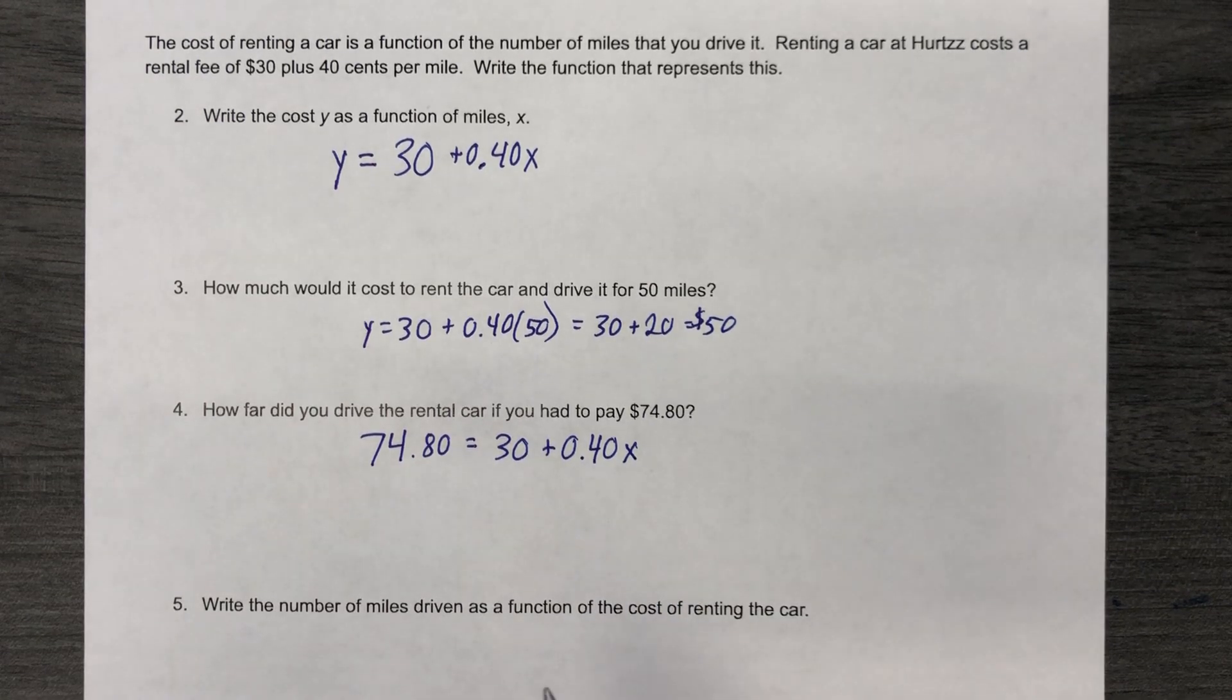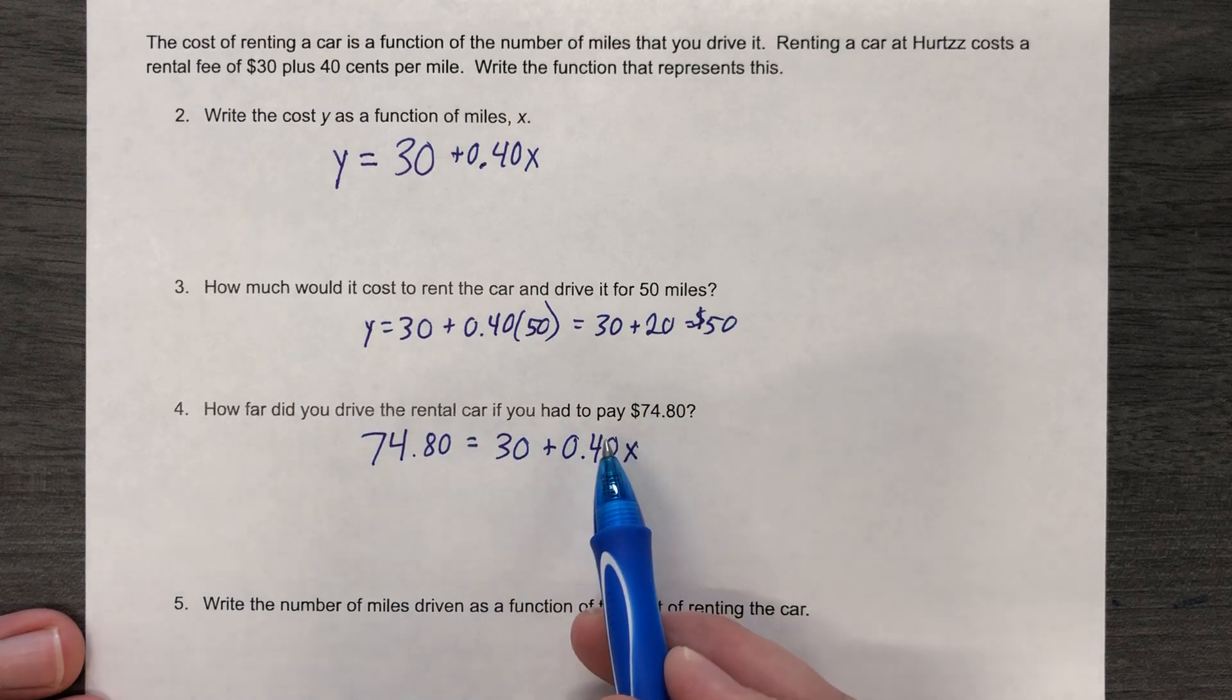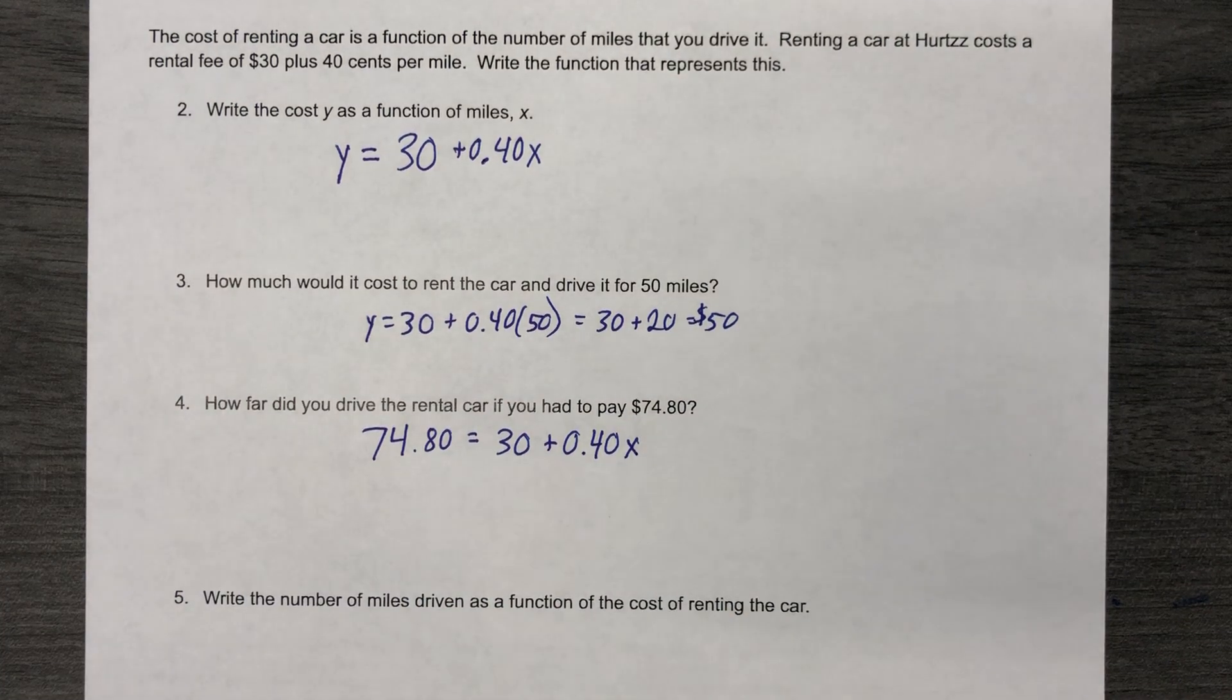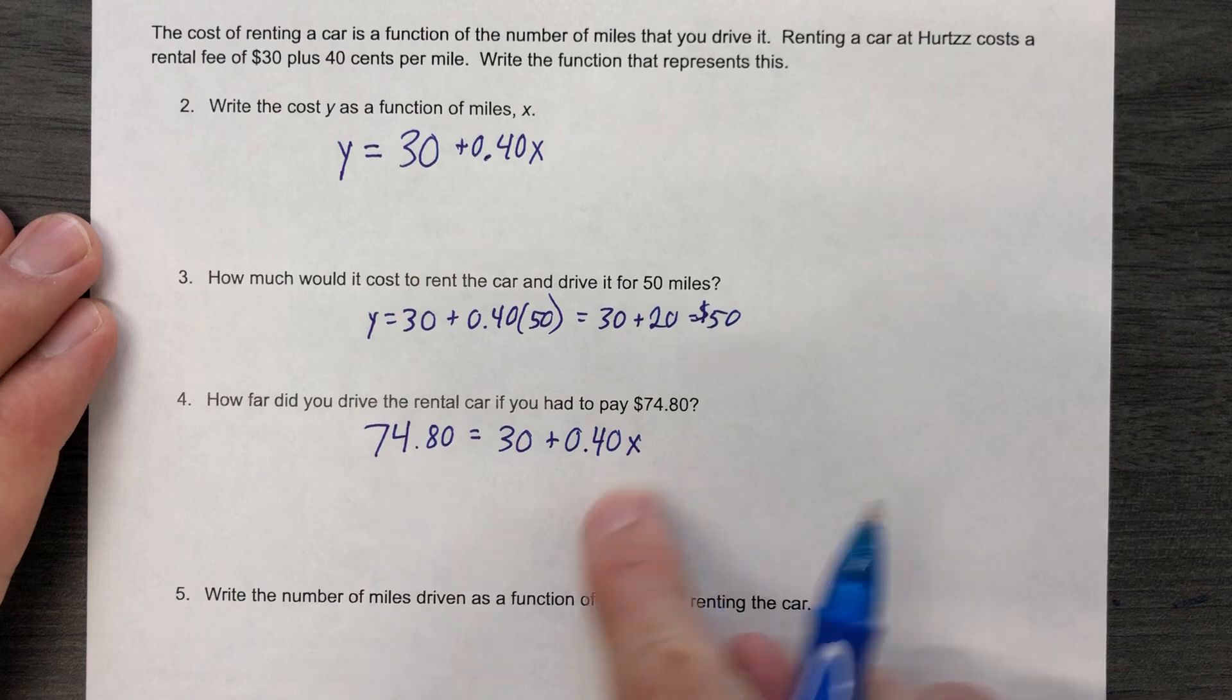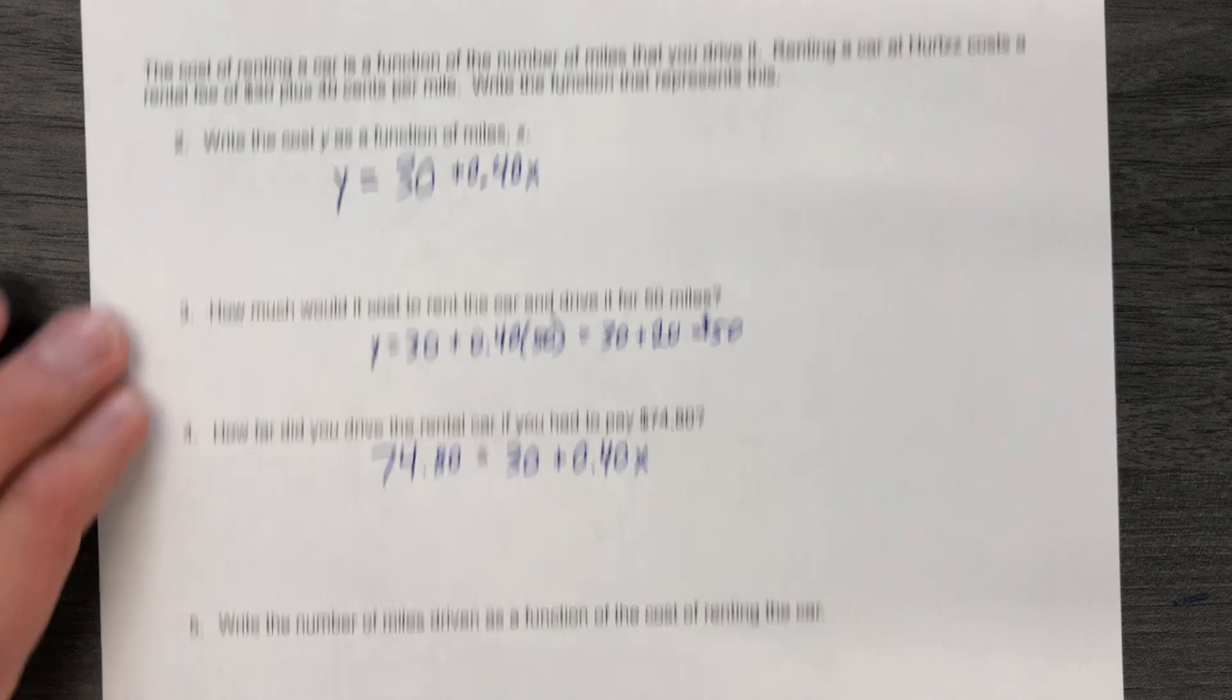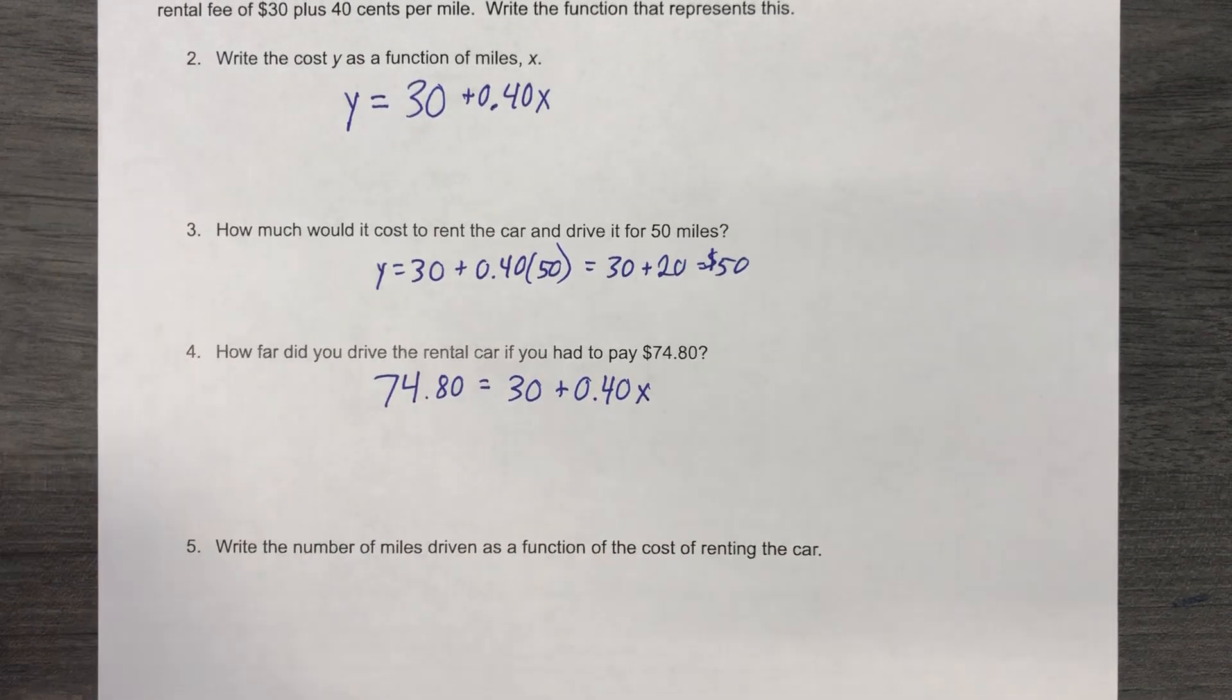Now, the way I used to structure this lesson was that I would have a problem that asked, how far did I drive if I had to pay this much? And the next problem said, how far did I drive if I had to pay this much? It was like, oh my goodness, make it stop. And it was to prove a point that you can solve for X over and over and over, or you could just solve for X to start with. So I didn't want to go through all that over and over again, but we are going to do it this time and then just talk about it right here on number five.